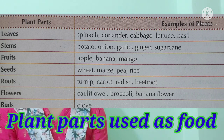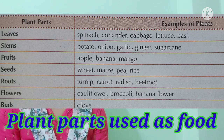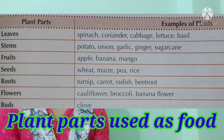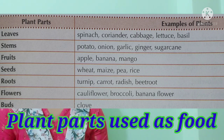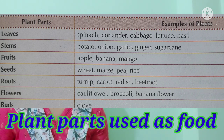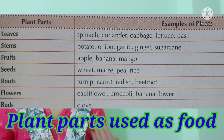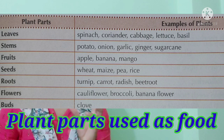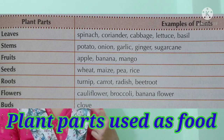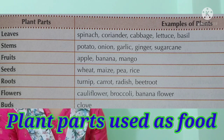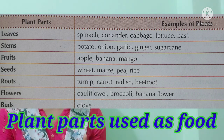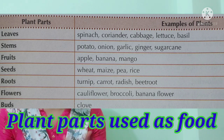Examples for seeds include wheat, maize, rice, and peas. These are all examples of seeds, such as cereals and pulses, which we use as food. For the flower part, cauliflower and broccoli are the best examples of flowers we use as vegetables.